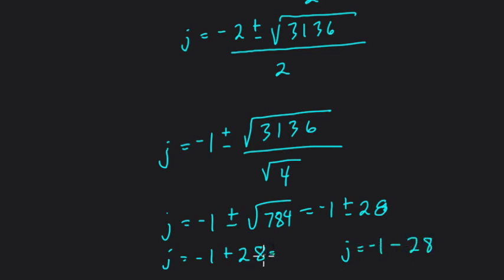And if we do negative 1 plus 28, we get 27. Here, negative 1 minus 28, well, that's negative 29. Here, negative 29, that can't be someone's age. It's a negative number. I'm going to reject it. So that means the age of this person with the letter J is 27. And the next age is J plus 2, 29.